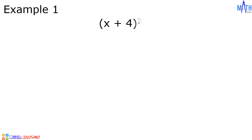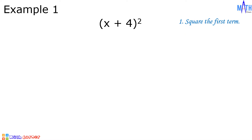Example number one: what is the square of x plus 4? Steps to follow. Step number one is square the first term. The first term is x. x times x is equal to x squared.